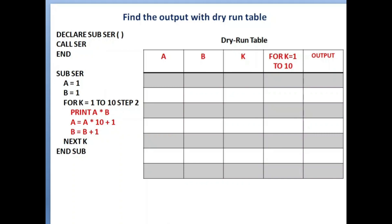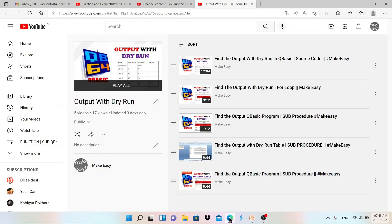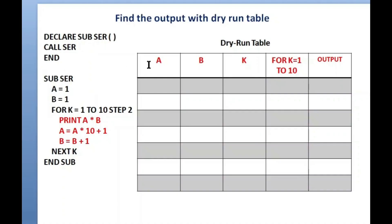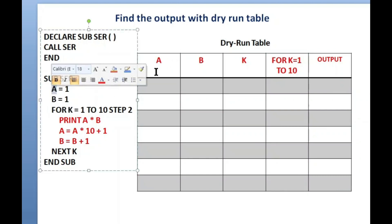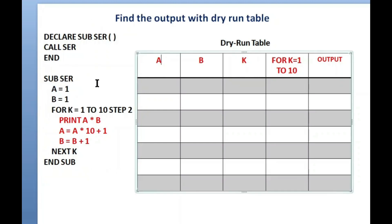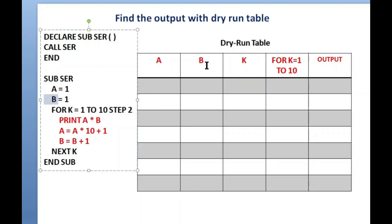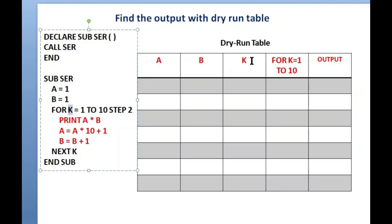There are a few videos already made by me on my YouTube channel. You can search 'Make Easy QBasic' on YouTube and watch those videos. When making a dry run table, you should write the variable names in the table. I have used variables A and B in the program, so I have written A and B here.